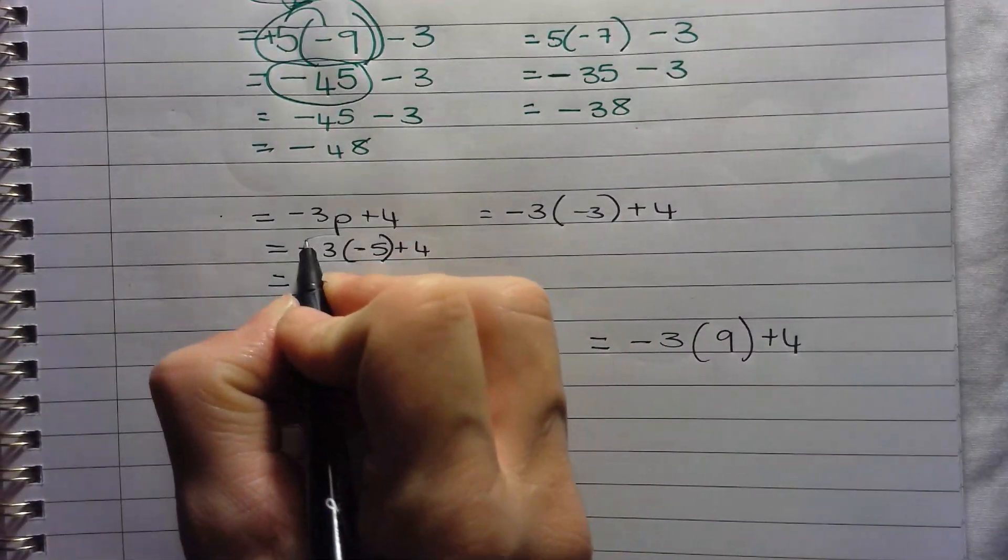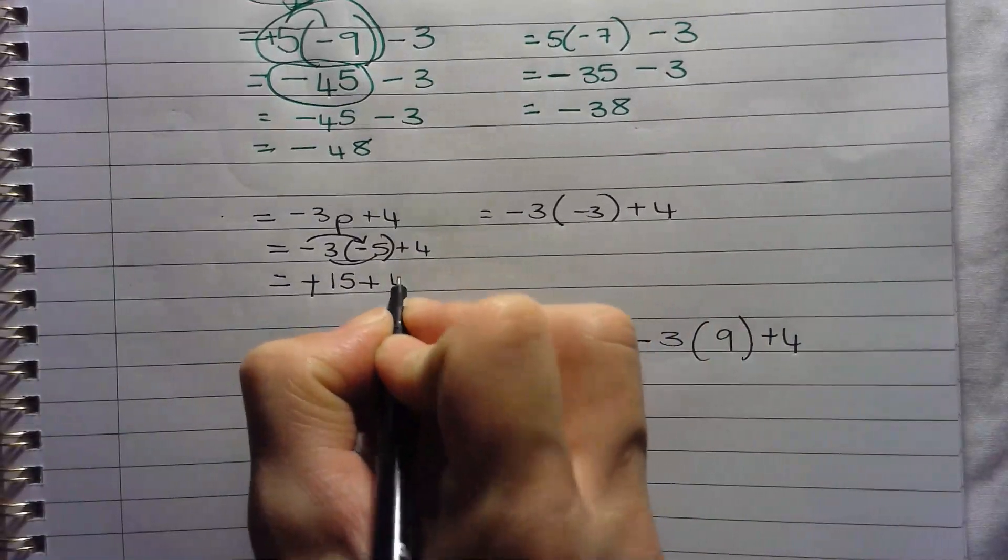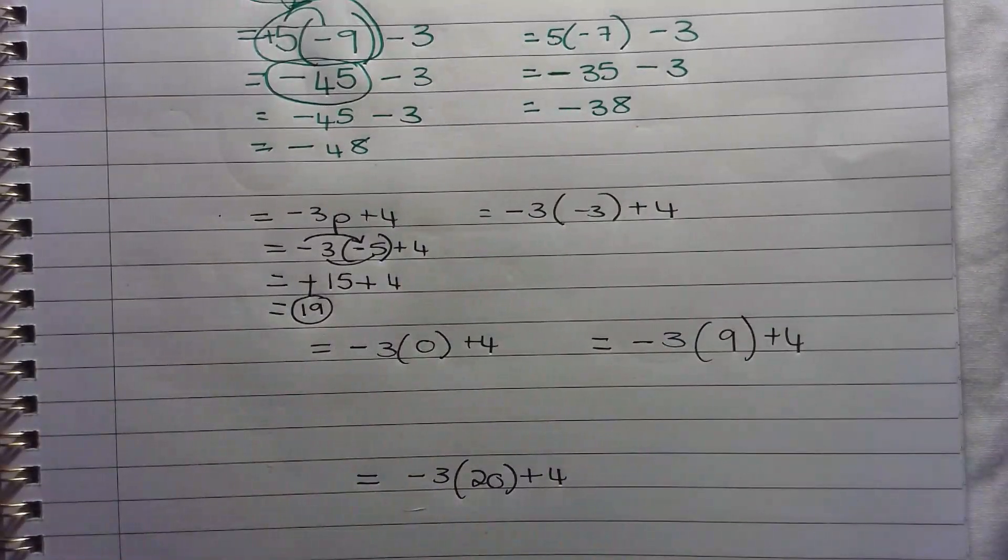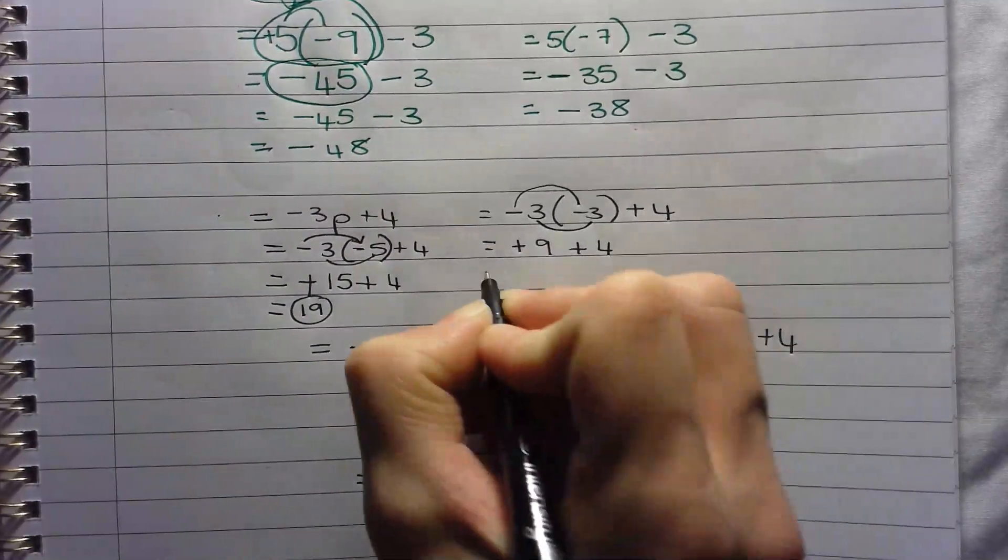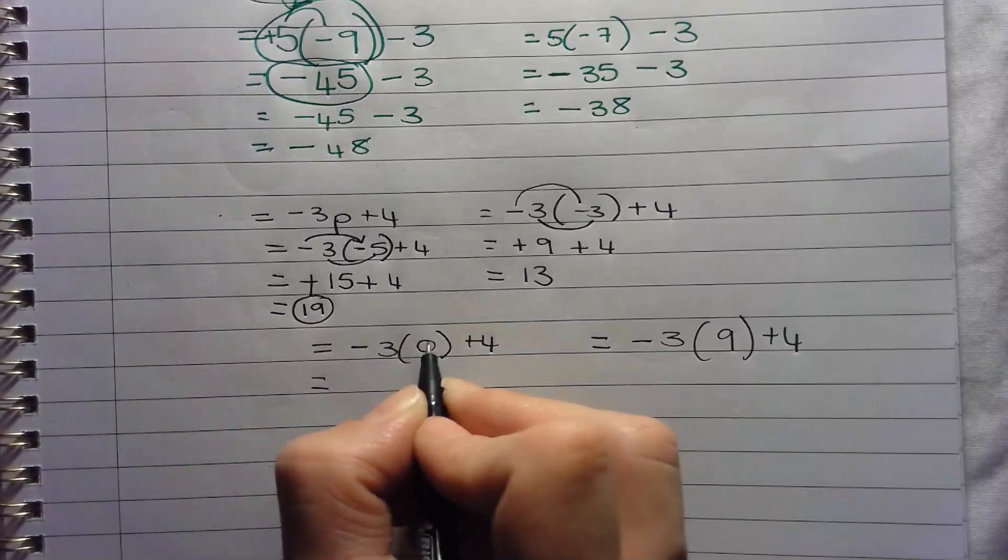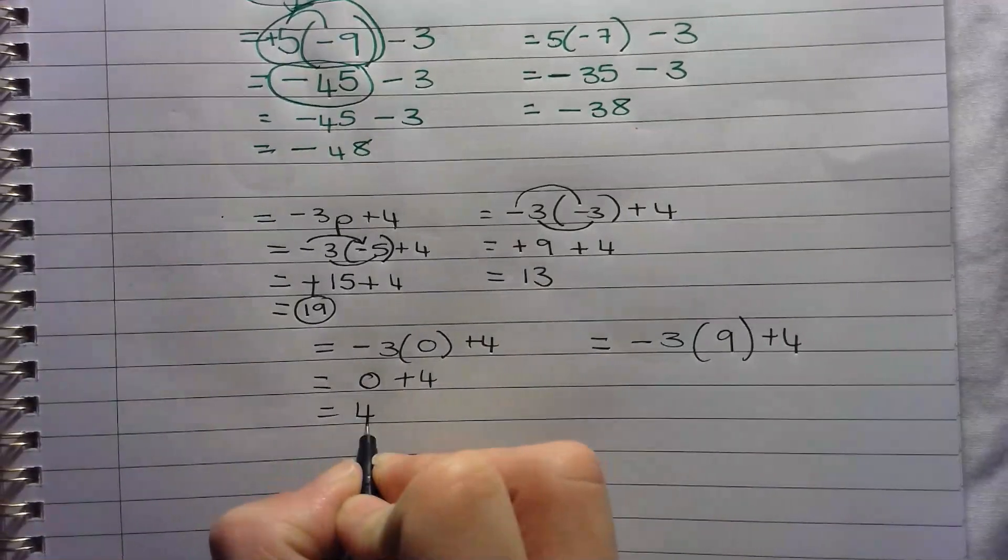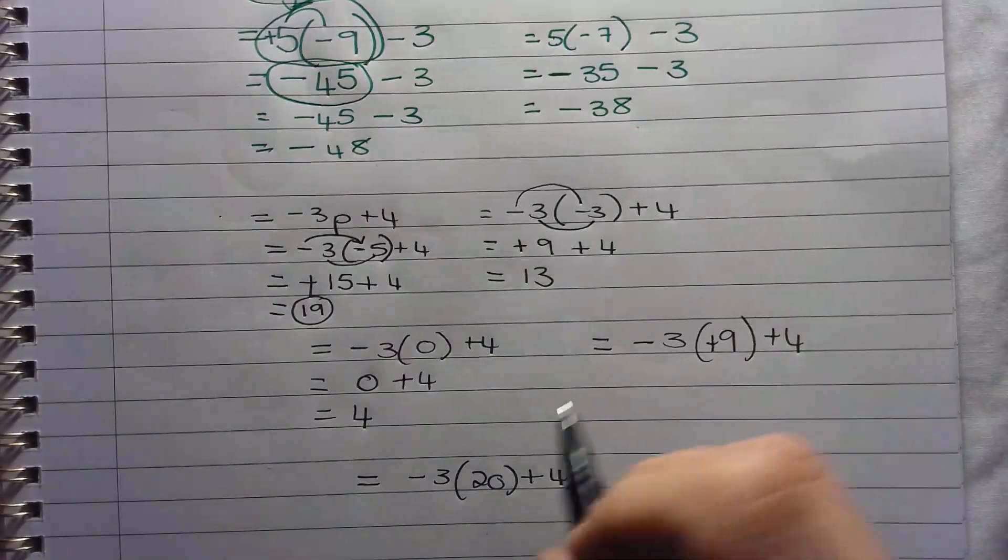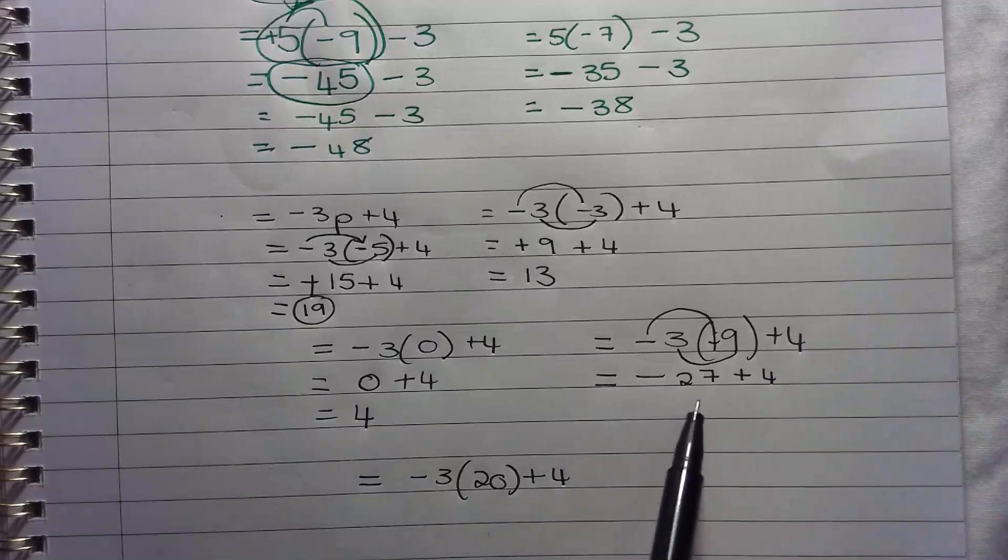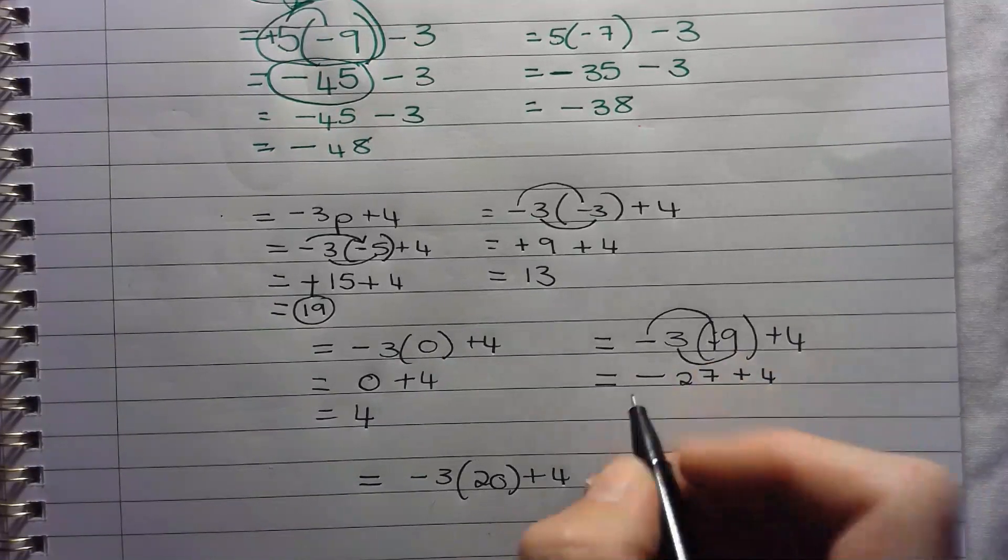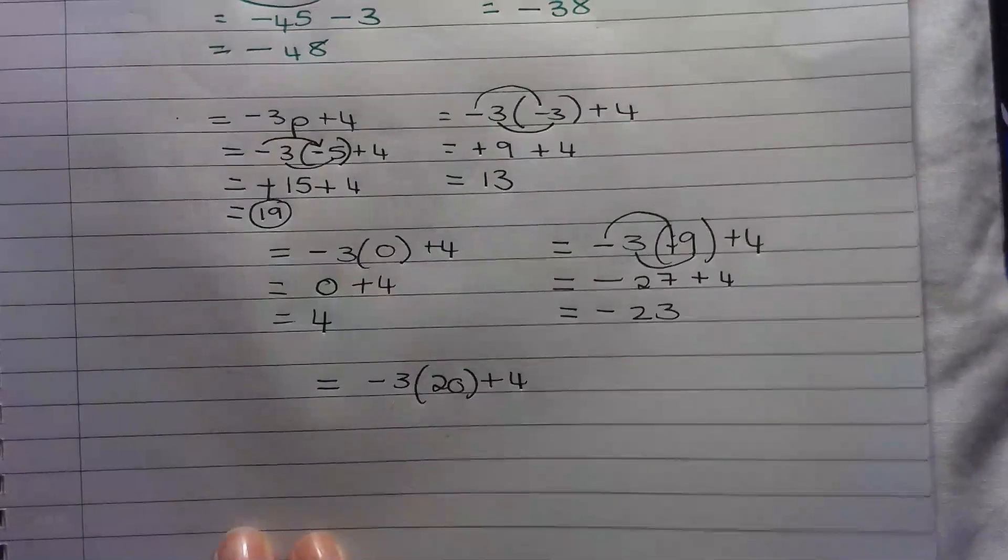So negative 3, touching a bracket means multiply. Negative times negative is positive. 3 times 5 is 15, plus 4 gives me 19. That's my first answer. Then negative times negative gives me positive. 3 times 3 gives me 9. And then I'm adding on a 4, which gives me 13. Anything times 0 is 0. Don't worry about the negative. It doesn't even matter. 0 plus 4 is positive 4. Then here I've got actually a positive 9 on the inside. So negative times positive is negative. 3 times 9 is 27. So you owe me 27 rand, but then you pay me 4 rand back. So you actually owe me less. So you only owe me negative 23 rand.